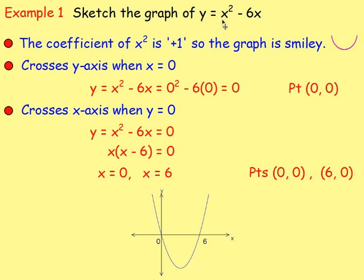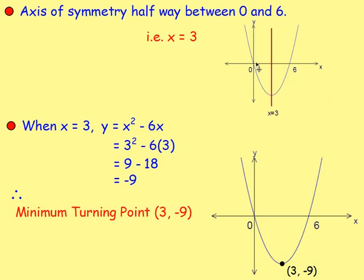You can average the two points to find out the axis of symmetry. Remember, your axis of symmetry will be x equals a number. You can use that number to find out the maximum or minimum turning point. In this example, the coefficient of x squared is one, so the graph is going to be like a smiley face. The axis of symmetry is halfway between the two roots — between zero and six you get three, so x equals three.